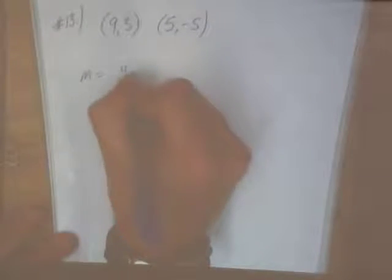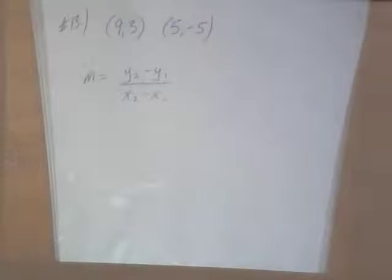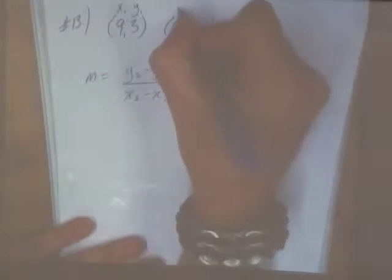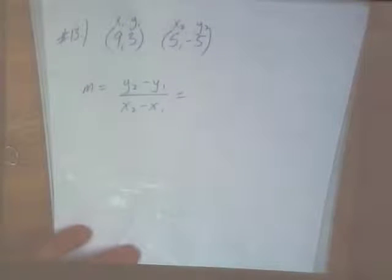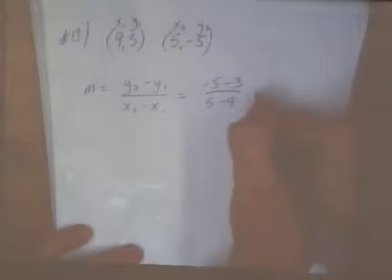Remember the formula for slope? Y2 minus Y1 over X2 minus X1. If you get nervous during the exam and you can't remember this formula, which one goes on top, the X's or the Y's, I'm not going to be able to help you, right? You're just going to have to wise up. So if you want, you can label your points. This will be our first point, so we'll call this X1, Y1. We'll call this X2, Y2. First point gets the ones, second point gets the twos. Fill it in, you get negative 5 minus 3 over 5 minus 9. Negative 8 over negative 4, 2. I'll be okay with that.